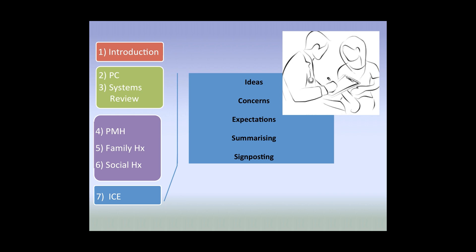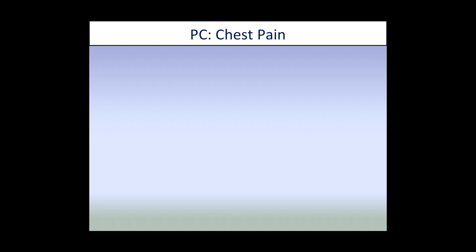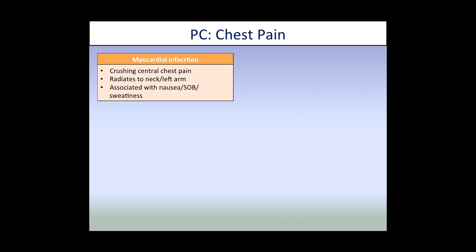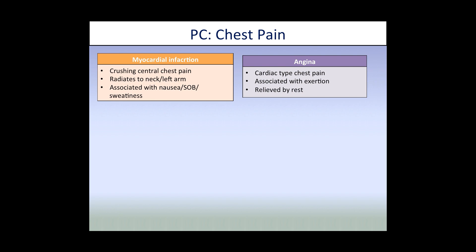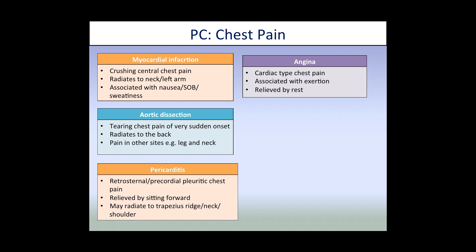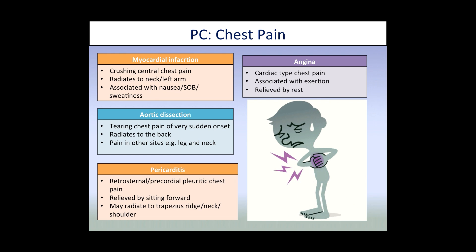I want to end with a few conditions and how they present, to give you an idea of what to look out for when taking a history. For chest pain: an MI typically presents with a centralised crushing pain radiating to the left arm and neck. Angina worsens on exertion and is relieved by rest. Aortic dissection presents as sudden onset pain radiating to the back. Pericarditis presents with pleuritic chest pain relieved when sitting forward.